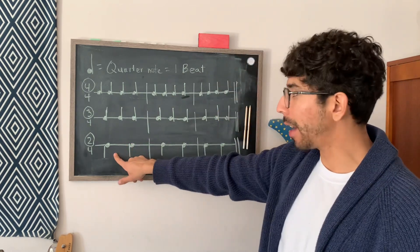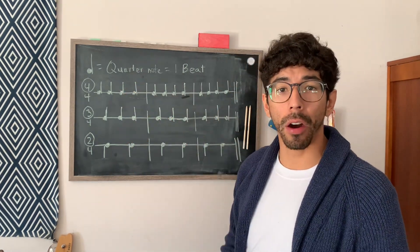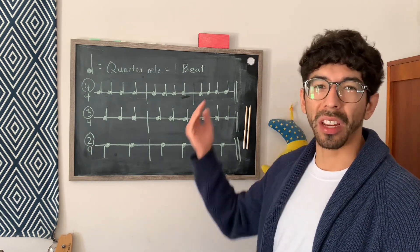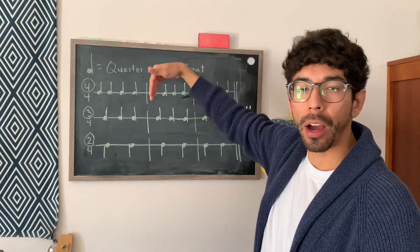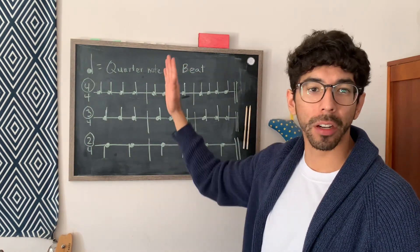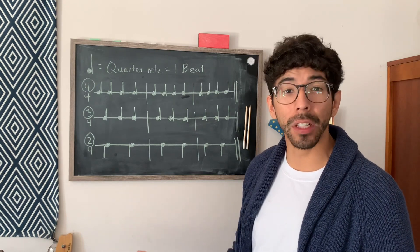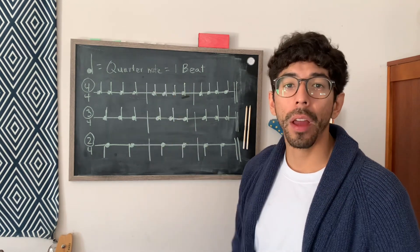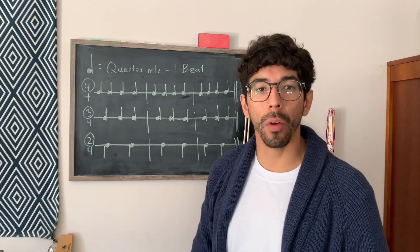And the quarter note is drawn by a full circle and a stem coming out of it. Now I drew the stems going down here, but they could go either up or down depending on where they are on the grand staff. So say if you have a high C, the stem's most likely going to go down. And if you're lower on the staff, the stem's going to go up. It's just easier to write. It doesn't make a difference if the stem's either down or up.